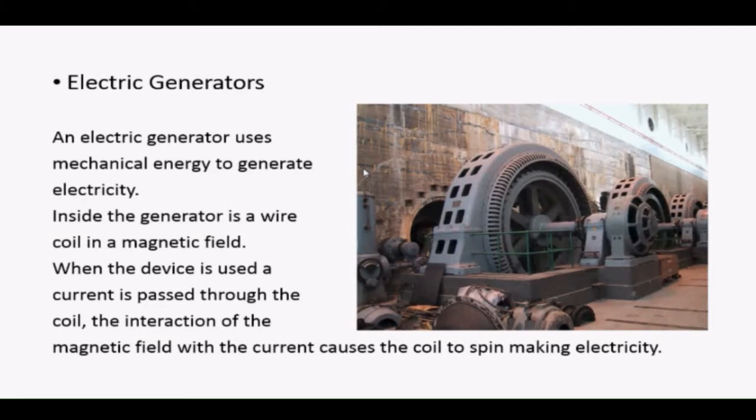The electrical generator uses mechanical energy to generate electricity. Inside the generator is a wire coil in a magnetic field. When the device is used, current is passed through that coil, and the interaction of the magnetic field with the current causes the coil to spin, making electricity.